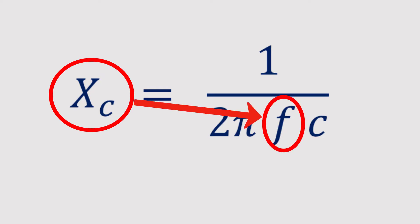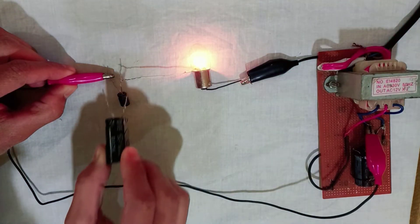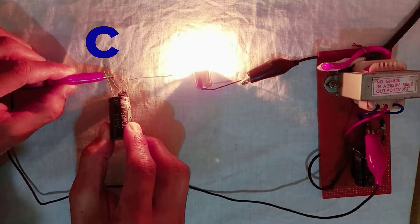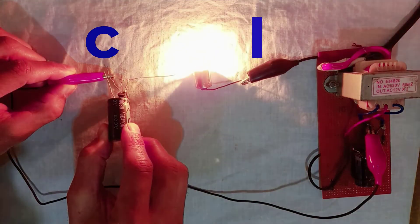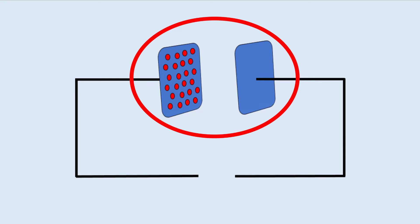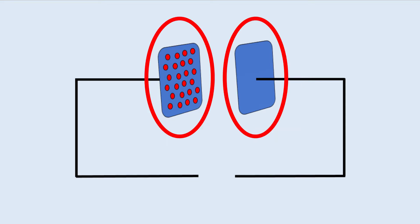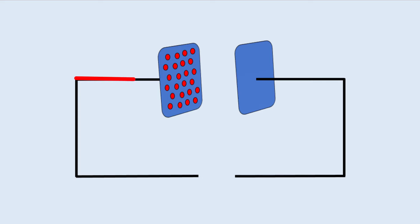If we increase the capacitance of a capacitor, the current will increase. This is due to the reason that a capacitor of higher capacitance is made up of larger plates which can accommodate more charge per volt. Therefore, a capacitor of higher value will draw more AC current and offer less resistance to the AC current.